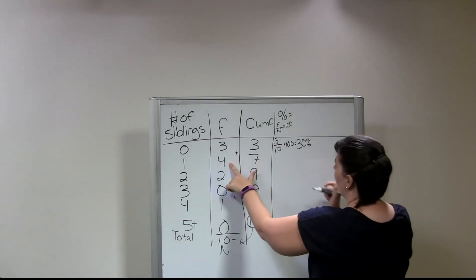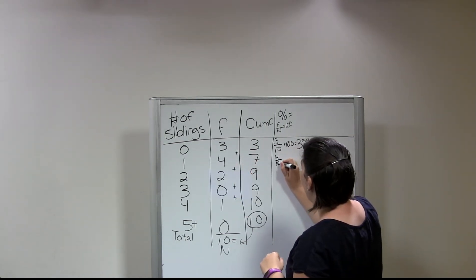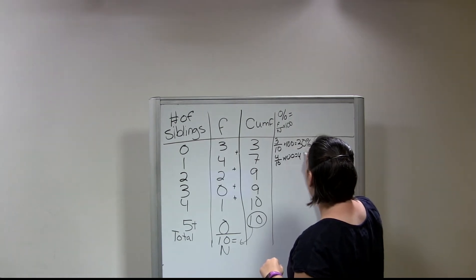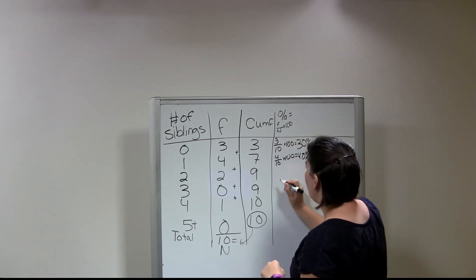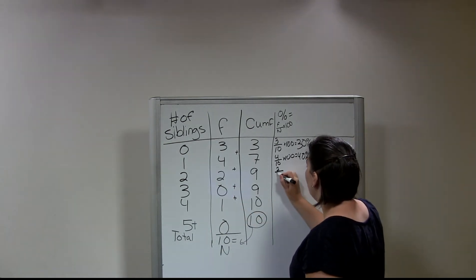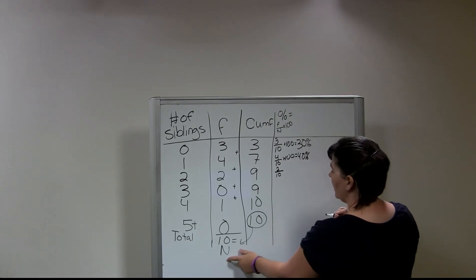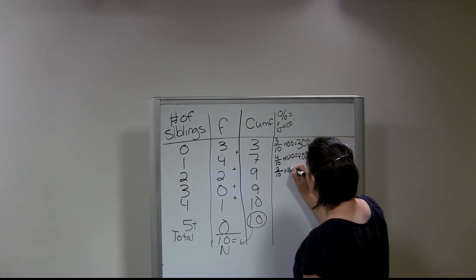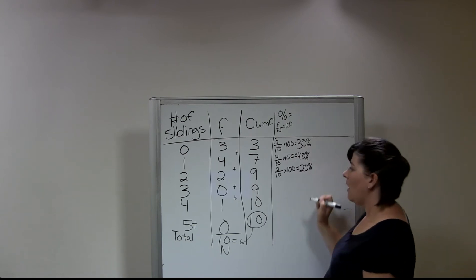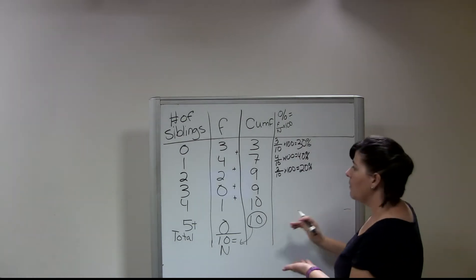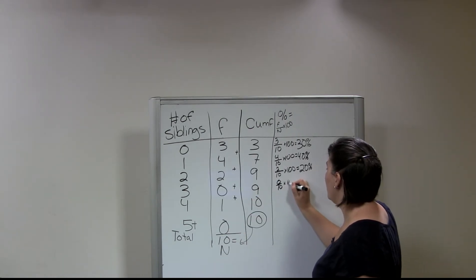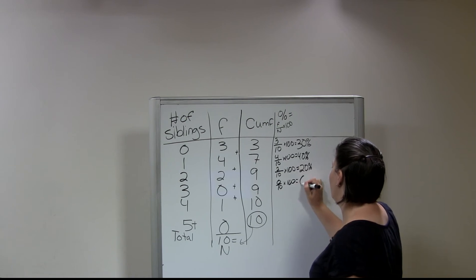So our next one, we have 4 divided by 10 times 100. It's going to give us 40 percent. And then for two siblings, we have a frequency of 2 divided by our N, which is 10 times 100. And that's going to give us 20 percent. And then for three siblings, we have no one. So 0 over 10 times 100 is going to give us 0 percent.